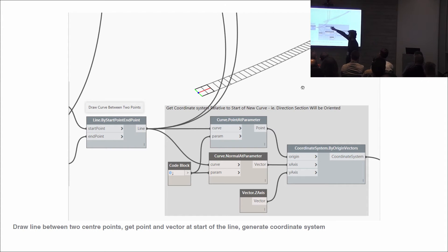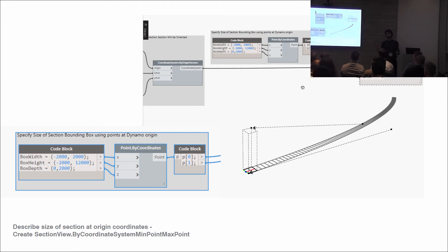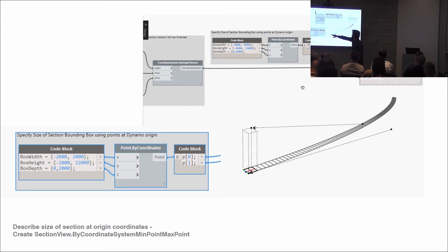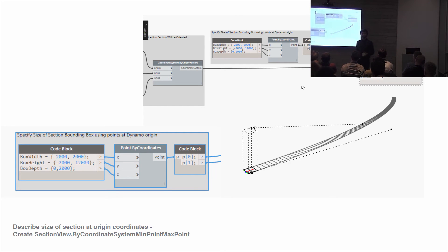We use the position, the look direction, and a Z-axis vector for orientation to make a coordinate system from that geometry. For the bounding box extents, we specify the width and maximum height — minimum width and minimum height — drawn at Dynamo's zero geometry. We then apply the coordinate system with min point and max point to create a section view by coordinate system, min point, max point. It's a really robust and fantastic way of creating sections — I think it supersedes any automated elevation creation.